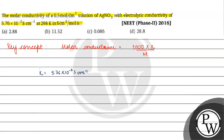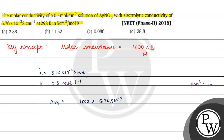If we talk about molarity, the value given is 0.5 mole per decimeter cube. Note that 1 decimeter cube is equal to 1 liter, so we can also write this as mole per liter. Now, writing molar conductance: 1000 × 5.76 × 10⁻³ divided by 0.5 mole per liter.